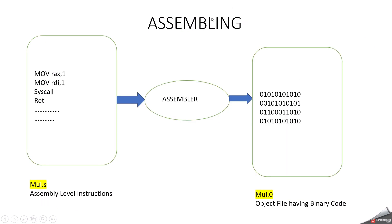Then during the assembling step, the assembly-level instructions will be converted to binary or hexadecimal format, which can be understood by the machine. We can say the assembler converts assembly-level instructions into machine-readable format — meaning binary or hexadecimal. This will come with the extension .o, becoming an object file that contains binary code.